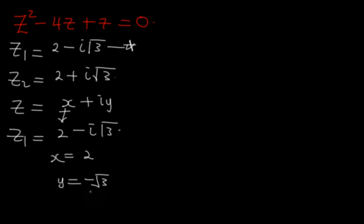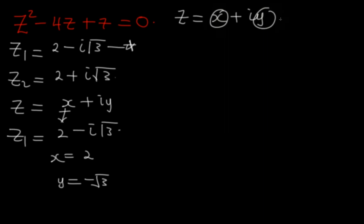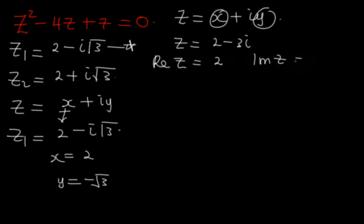Can we define a complex number now? We conclude that a complex number z is any number with two parts: the real part, which is x, and the imaginary part, which is y. For example, if z = 2 − 3i, the real part of z is 2, and the imaginary part of z is −3. The i identifies that the part which is imaginary is −3.